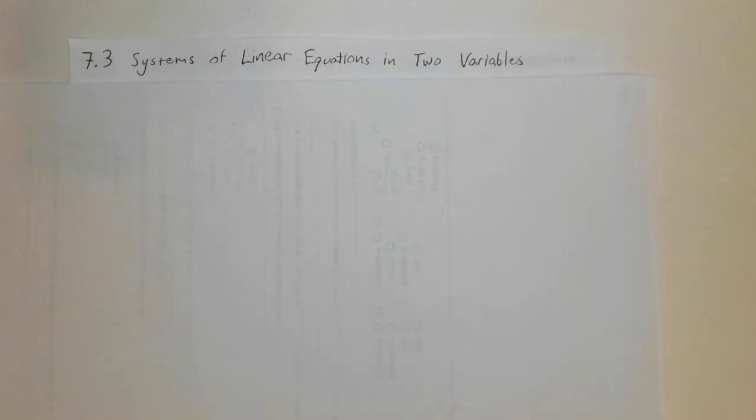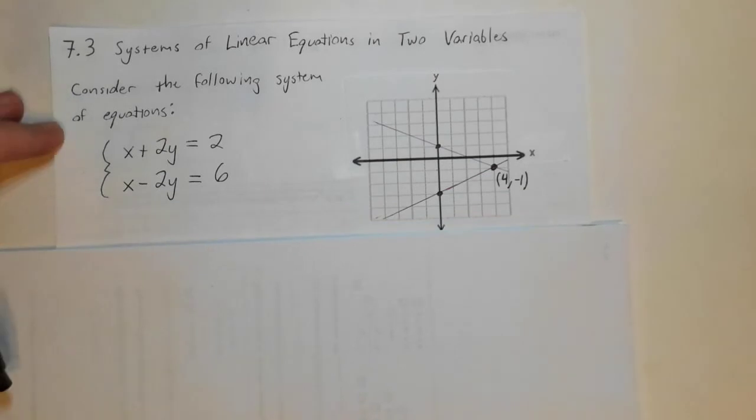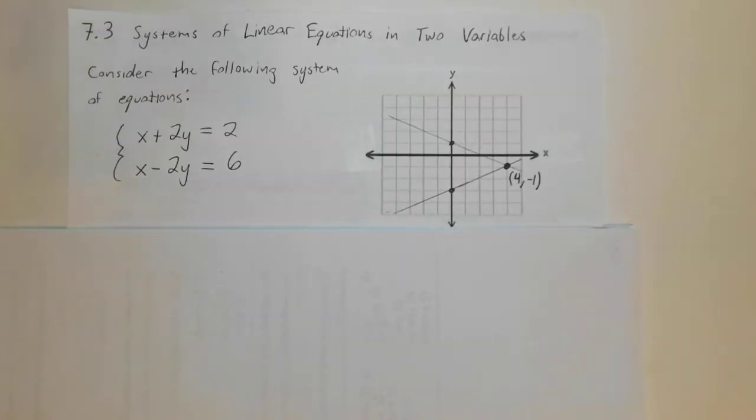Alright, so 7.3, we're talking about systems of linear equations. So let me just start with what that looks like. A system of equations will have, sometimes it will have a bracket, sometimes not. That just means to consider these two equations at the same time.